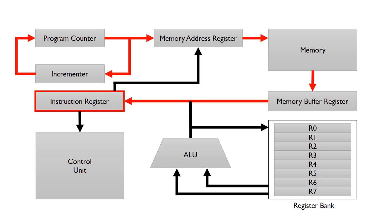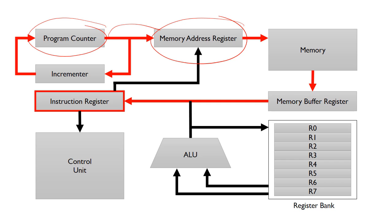The value in the program counter will be copied to the memory address register. Suppose the memory address register contains a value 99 — whatever instruction is at address 99, this might be 0101 for example. This will be copied to the memory buffer register, so 0101 will be copied to the memory buffer register.